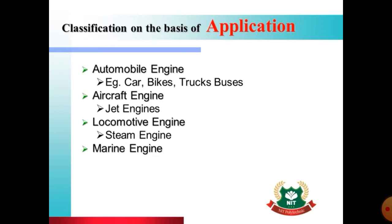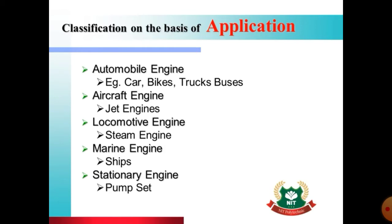Other applications include marine engines, in which large-size IC engines are manufactured and used as a powerhouse for ships and cruises. The last type is the stationary engine — these engines are not movable. They are placed at a particular location. The most common application for a stationary engine is a farm, and the same engines can be used for power generation with generators.